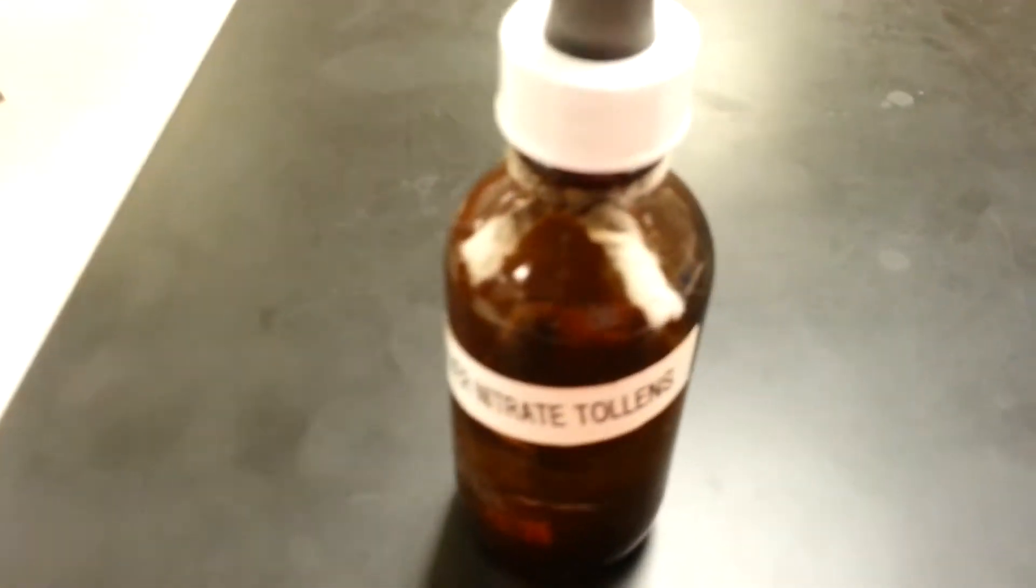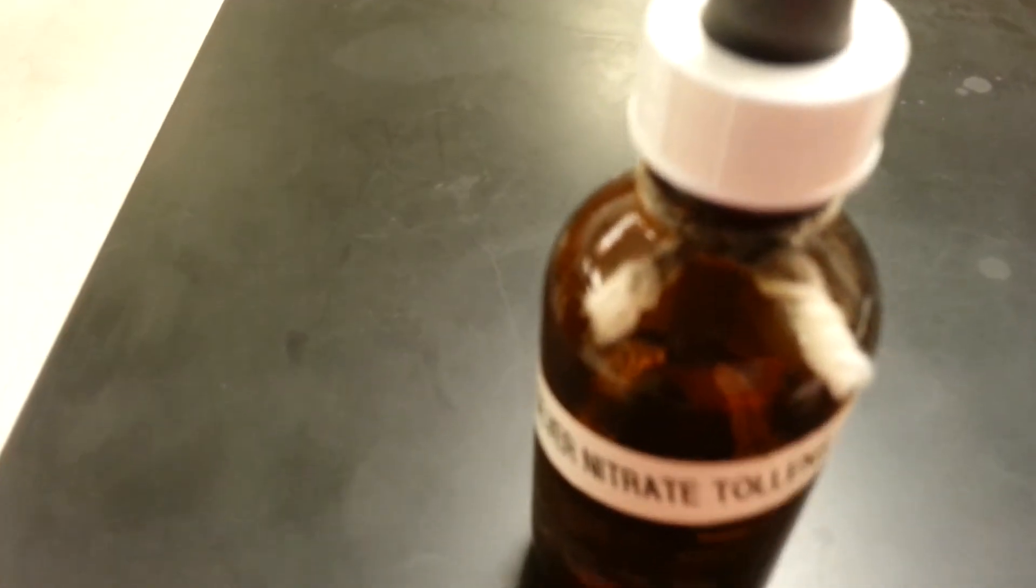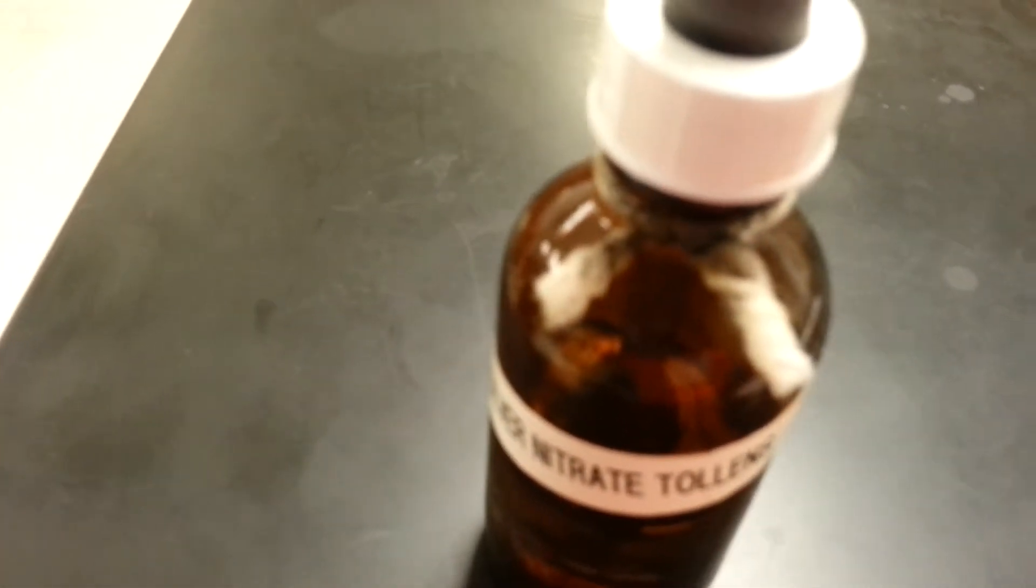And here we have Tollens Reagent, atomical silver nitrate Tollens Reagent. You add sodium hydroxide solution to silver nitrate to form a precipitate. Then you add dilute ammonia solution until precipitate dissolves.